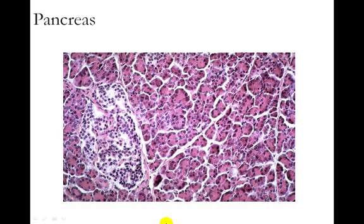The first thing I want to look at is the pancreas. The pancreas is very unique because it is actually both an endocrine and an exocrine gland. It not only secretes hormones, but it also secretes some very important digestive enzymes. Because of that different functionality, there are very different cell types in the pancreas, and those cells can be observed in very defined compartments within the pancreas.